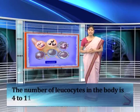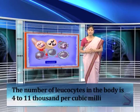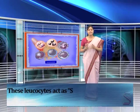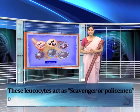The number of leukocytes in the body is 4,000 to 11,000 per cubic millimeter. They capture and destroy harmful and disease-causing organisms in the body, protecting it from the harmful effects of germs. In the battle between leukocytes and invading germs, some leukocytes get killed. The other leukocytes remove the dead germs from the body in the form of pus. These leukocytes act as scavengers or policemen of the body.